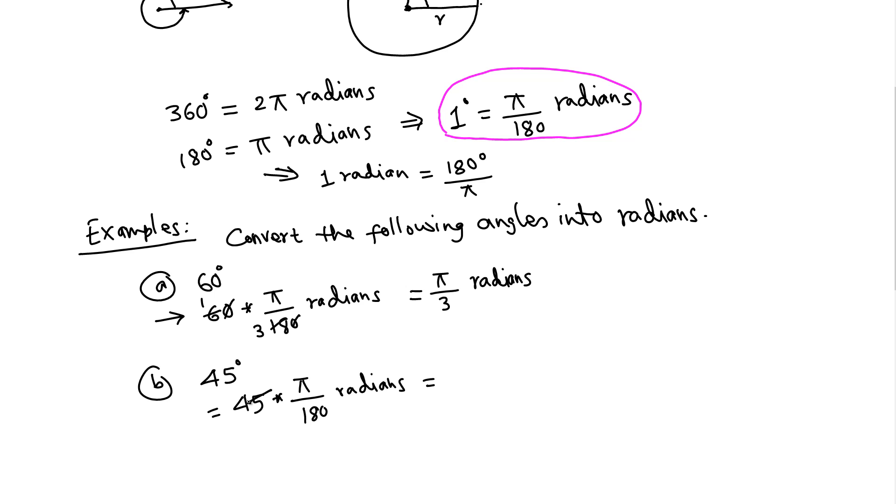45 times 2 is 90, 90 times 2 is 180, so 45 goes into 180 four times, giving us π over 4 radians.